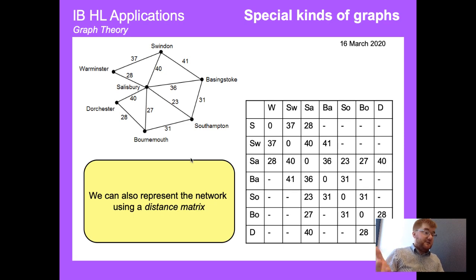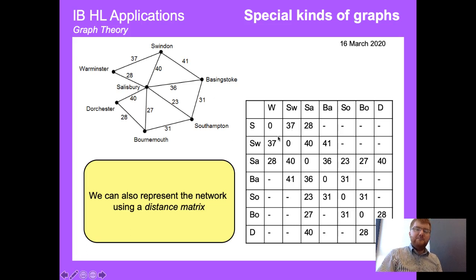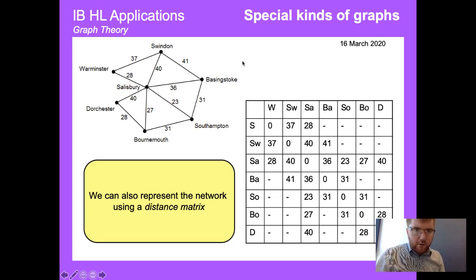We can put a weighted graph into matrix form. For example, from Warminster to Swindon it's 37 miles. Because it's not a directed graph, the matrix is symmetric — the same value appears on both sides of the diagonal. If we had directed graphs this symmetry would change.